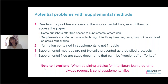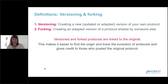Versioning is when you create a new updated version of your own protocol — for example, if you posted a method two years ago and have made changes to the reagents and procedures, you can post a new version. Forking is when you share a version of a protocol that reflects how you've adapted someone else's protocol — making some minor or major changes to create your own version, which allows the original creators to get credit and see how others are adapting their methods. Both versioning and forking are possible on protocols.io, while protocol exchange currently offers versioning but not forking. Versioned or forked protocols are linked to the original, making the original easier to find and helping track the evolution of protocols within and across labs.